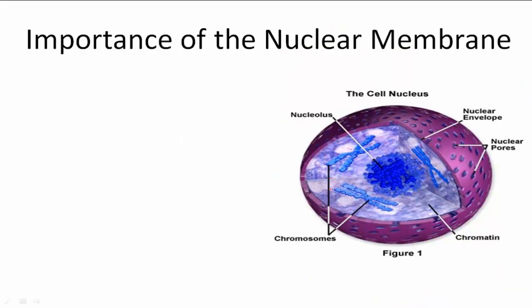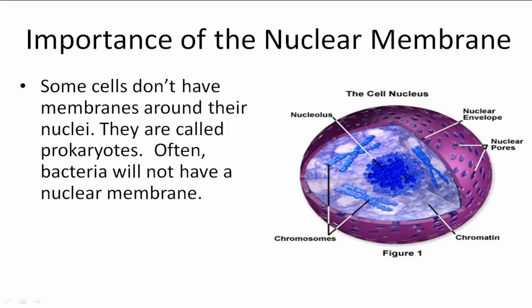Now the importance of a nuclear membrane. Some cells don't have membranes around their nuclei. The membrane is this outer shell around the nucleus. And the cells that don't have membranes are called prokaryotes.